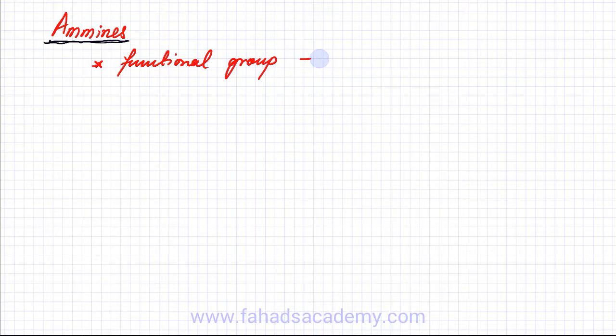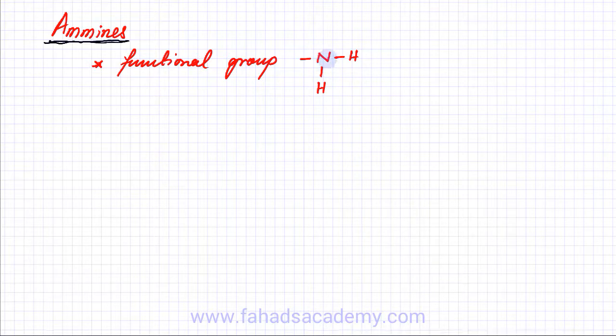The next homologous series you will study are called amines. For O levels it's not very important to know a lot about amines, but you just need to know what the structure of an amine looks like. Amines have a functional group: there is a nitrogen atom attached to hydrogen atoms, and there is a carbon chain — represented by R — attached to that NH2 group. This group is called the amine functional group.